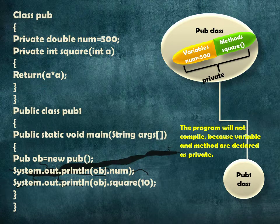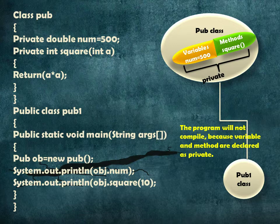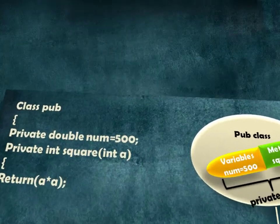Here is an example using the same program seen for the public access modifier. The only difference is the access specifier: for the num variable, private is given, and for the square method, private is given. When you try to execute this program, you cannot compile it because the variable num and the square method have private access in the class pub and cannot be accessed from the pub1 class.